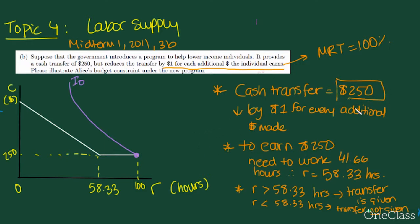So we know the cash transfer is equal to $250 and it decreases by $1 for every additional dollar that you make. So we know, the first thing we need to think about is how much do we need to work to earn $250.